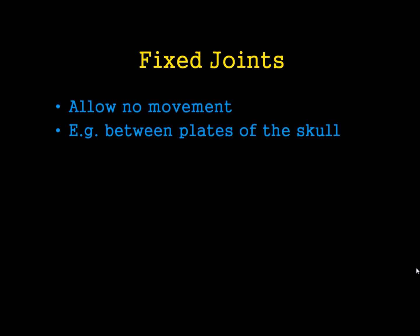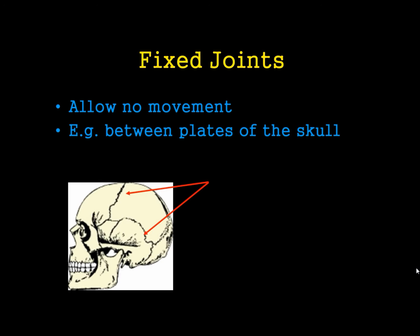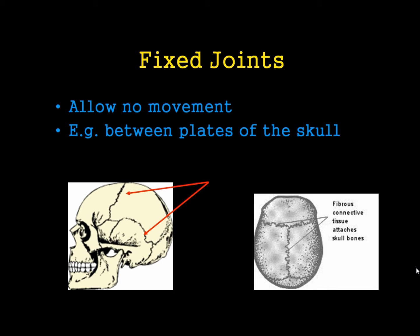Fixed joints allow no movement at all. These are not maybe what you think of when you think of a joint in the human body, but this is where two bones meet and there is no movement. A great example of this is in between the different plates inside the skull. The skull is actually composed a bit like a jigsaw, and the pieces of the skull are slotted together. Those are still called joints — even though there is no movement, they are fixed joints. You have this fibrous connective tissue, like a very hard glue that actually glues the skull together, but they do count as a joint because two bones are meeting.